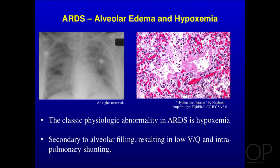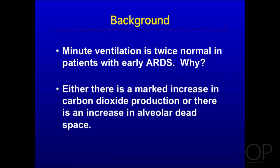Everyone knows that the classic physiologic abnormality in ARDS is hypoxemia. The patient's chest X-ray has bilateral airspace opacities, and the histologic picture shows alveolar filling. The hypoxemia is secondary to alveolar filling and also some degree of atelectasis of the alveoli, resulting in low VQ and frank intrapulmonary shunting. But we have noticed in ARDS network and other clinical trials for many years that the baseline minute ventilation in patients enrolled in clinical trials is virtually always elevated to about twice normal.